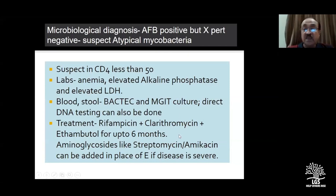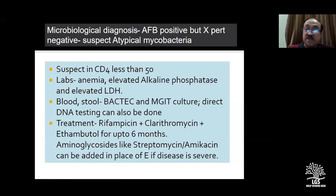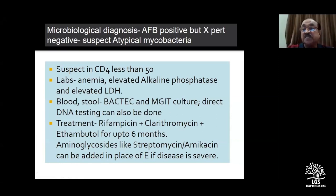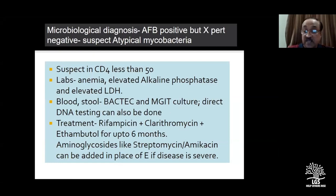To summarize the organisms: Mycobacterium bovis and tuberculosis are more common. The avium complex is an atypical mycobacterium occurring in disseminated tuberculosis especially in immunocompromised individuals, where AFB is positive but Gene Xpert is negative, and response requires addition of clarithromycin to rifampicin and ethambutol.